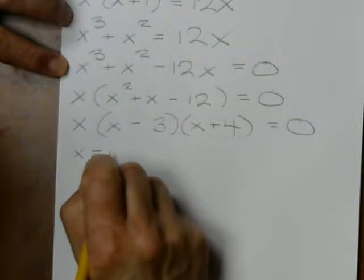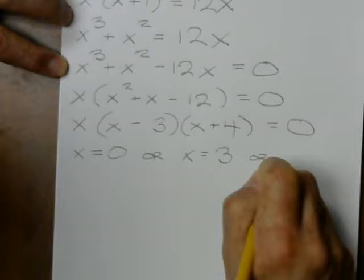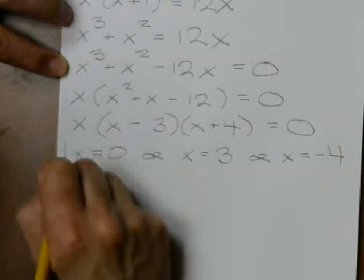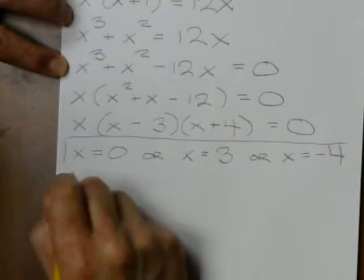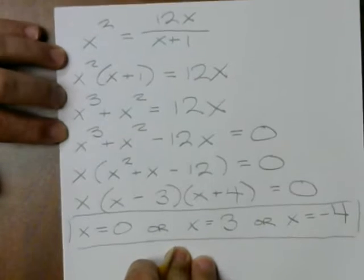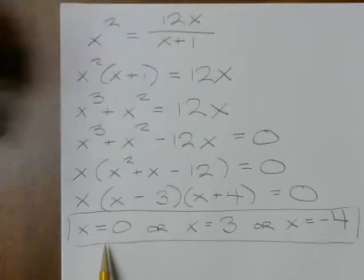So now I know x equals 0 or x equals 3 or x equals minus 4. So 3 solutions at 0, it's obviously going to be 0 equals 0.